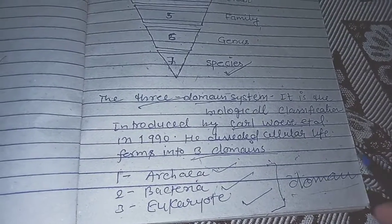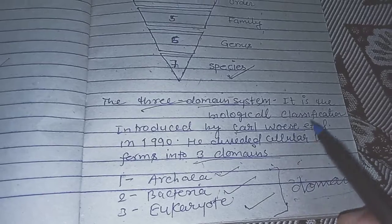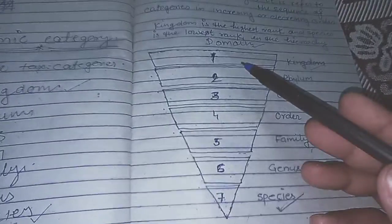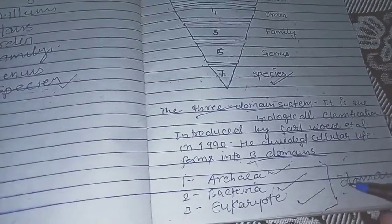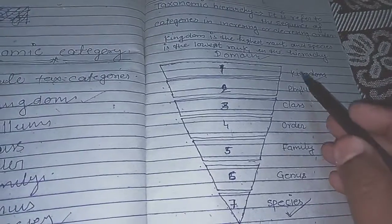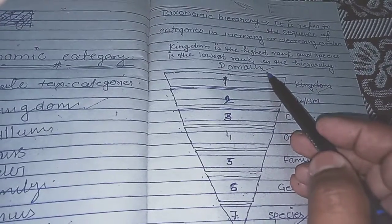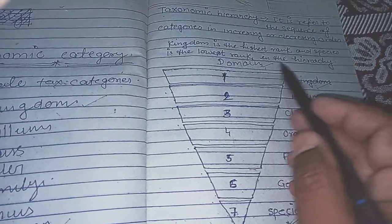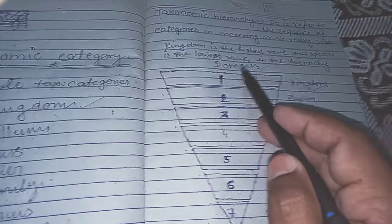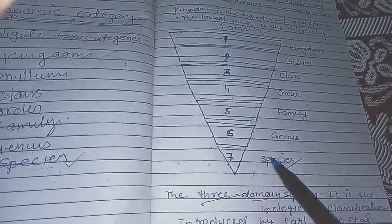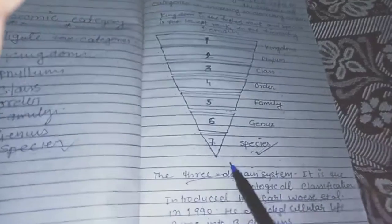Karl Woese introduced eight taxonomic categories. While the standard system has seven categories, Woese added an eighth category called Domain, which is placed above Kingdom. Domain is also called super kingdom. So the order becomes: Domain (highest), Kingdom, Phylum, Class, Order, Family, Genus, Species (lowest) — according to the Three Domain System.